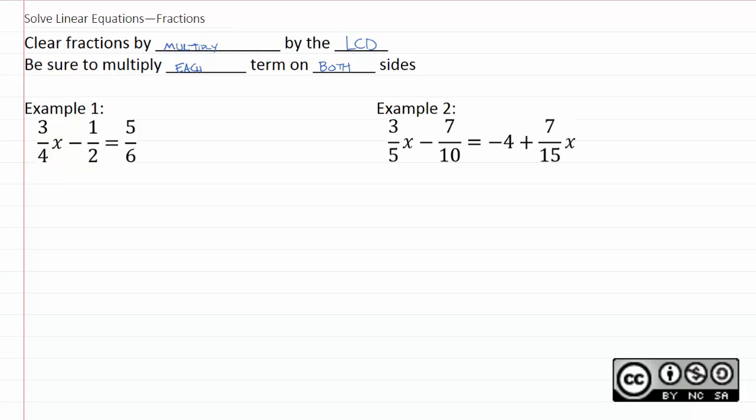If you haven't found LCDs in a while, remember it's very easy. The trick is just to prime factorize all of your denominators. Two is already prime, that's easy. Four works out to two squared. Six works out to two times three.